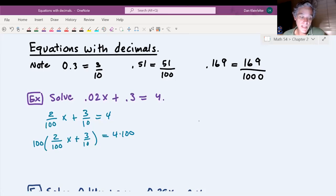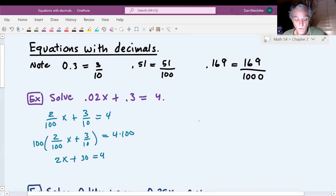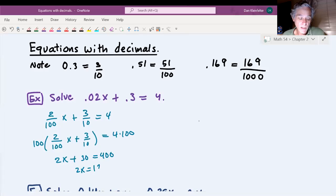2 one hundredths times 100 just gives 2, 2x there. And then 100 times 3 tenths is going to be 30. Right side is 400. Taking away 30.